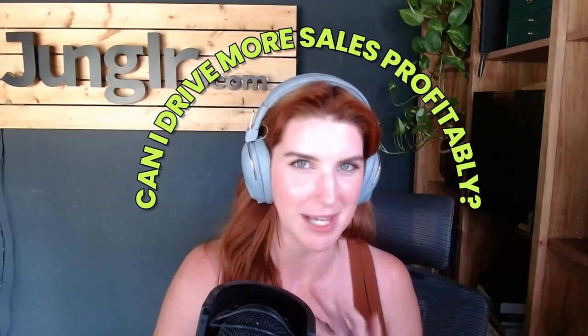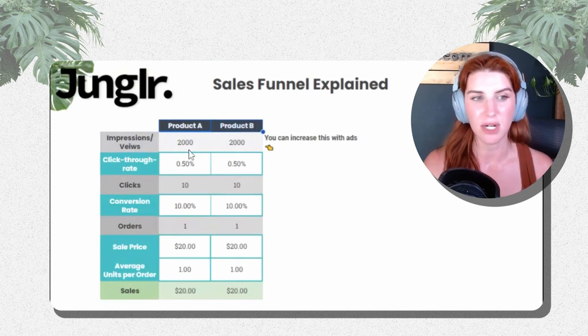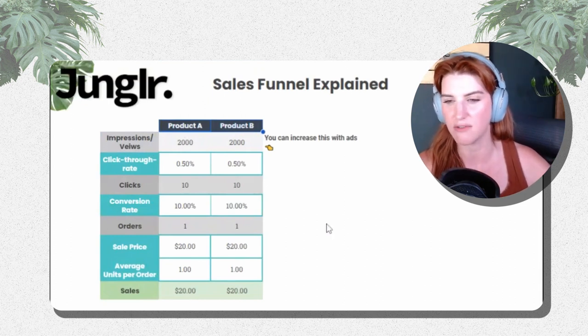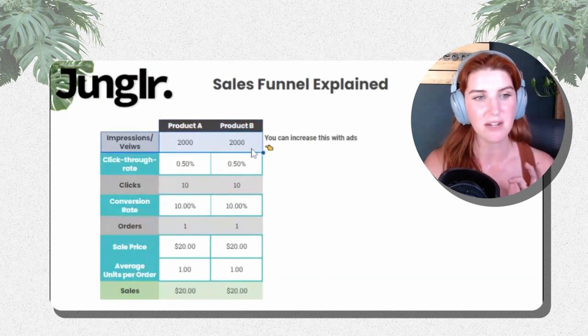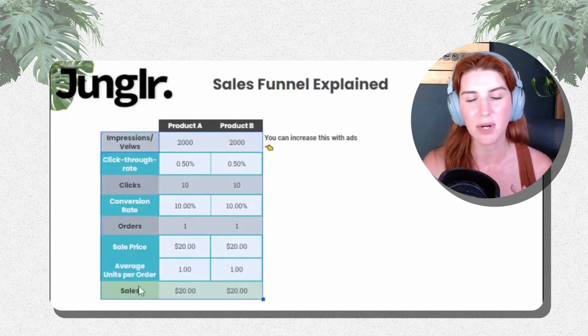At the end of the day, when growing Amazon businesses, all we really care about is: can I drive more sales? Driving sales profitably is a separate conversation. Right now we're just talking about the sales funnel, the choke points, and how we can drive more sales through data. We'll start at the top and look at Product A and Product B. There's a spreadsheet you can access that works as a forecasting tool, and I want to walk through the different choke points and how they influence sales.